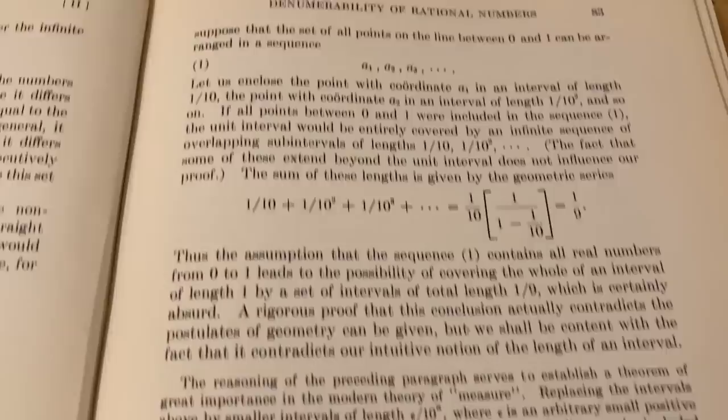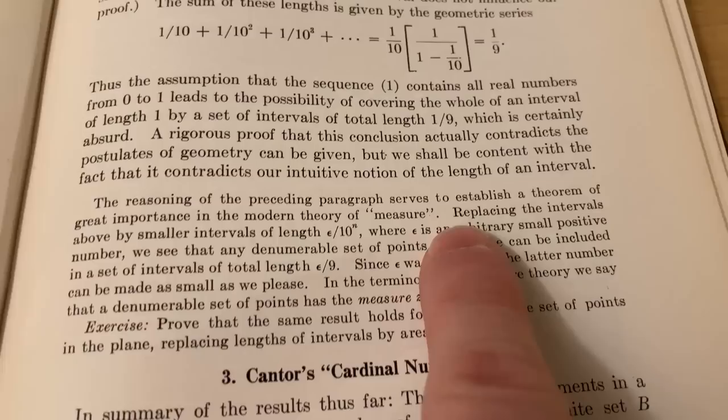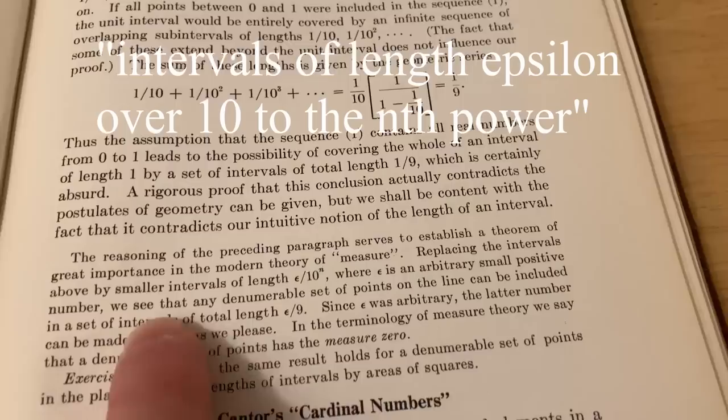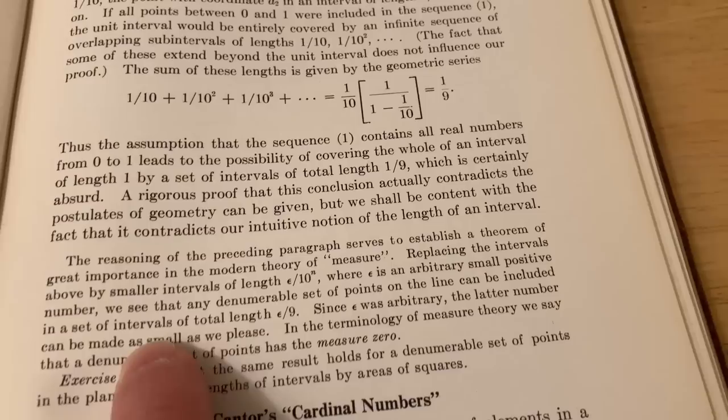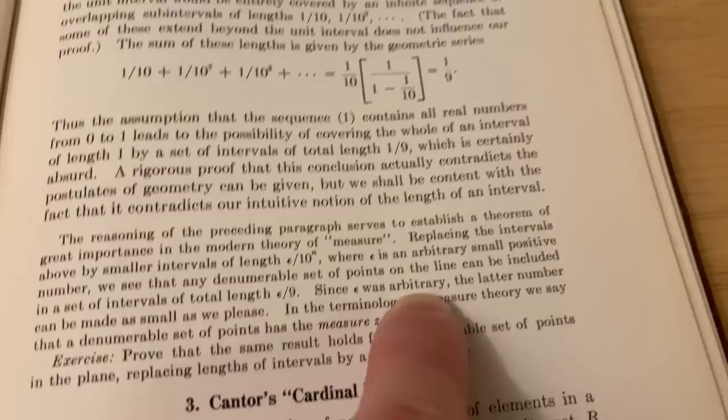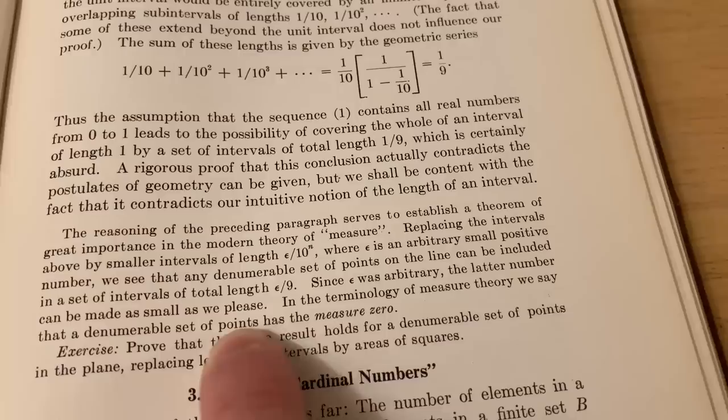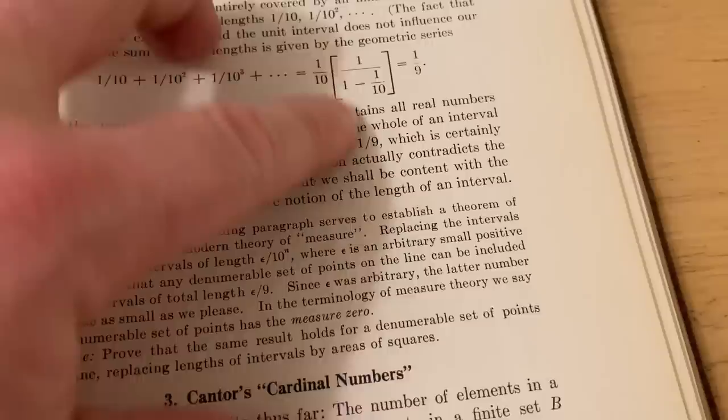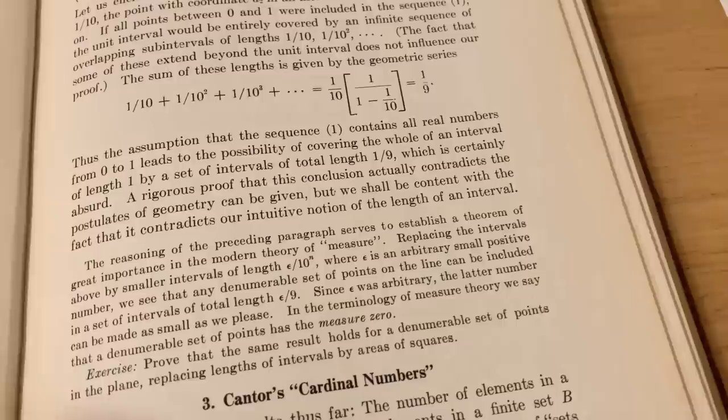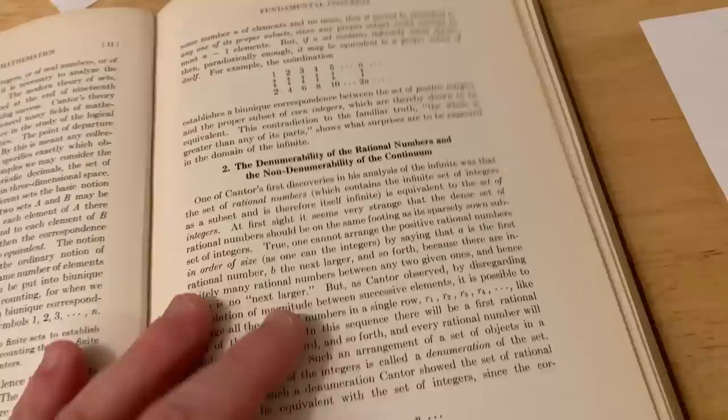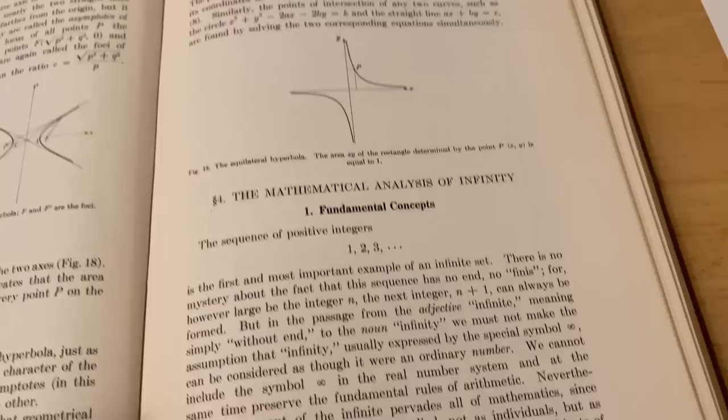Then here he goes on and talks about how this relates to measure theory. Replacing the intervals above by smaller intervals of length epsilon over 10, where epsilon is an arbitrary small positive number, we see that any denumerable set of points on the line can be included in a set of intervals of total length epsilon over 9. And since epsilon was arbitrary, the latter number can be made as small as we please. In the terminology of measure theory, we say that a denumerable set of points has measure zero. So you can prove that using a similar argument here, as he just explained. So, I mean, he's talking about measure theory only a few pages after introducing the notion of two sets being equivalent. I mean, what a fantastic book.